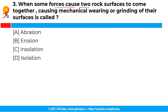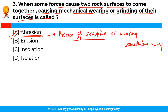When some forces cause two rock surfaces to come together, causing mechanical wearing or grinding of their surfaces, this is called which among the following? The correct answer is option A, that is abrasion. Abrasion is the process of scraping or wearing something away. The forces causing two rock surfaces to come together causing mechanical wearing or grinding is nothing but abrasion.